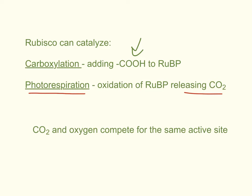Carbon dioxide and oxygen actually compete for the same active site on rubisco. Since oxygen is a byproduct of photosynthesis, it competes with carbon dioxide for that active site, resulting in about a 20% loss of fixed carbon that gets released back as carbon dioxide under normal circumstances.